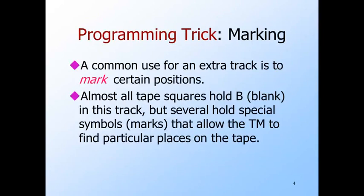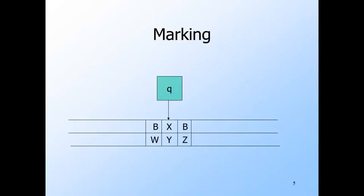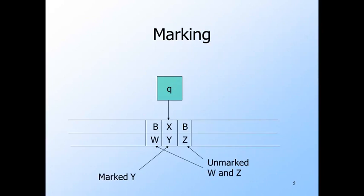A good use of the idea of tracks is to use one track for data and another track for marks. In the marking track, almost all the tape squares have a blank value, but one or more have special symbols — the marks — that indicate a place on the tape that the Turing machine needs to find later. For example, the bottom track holds the data and the top track is the marking track. The symbol x, y represents a marked y, while unmarked symbols appear on the data track without marks.